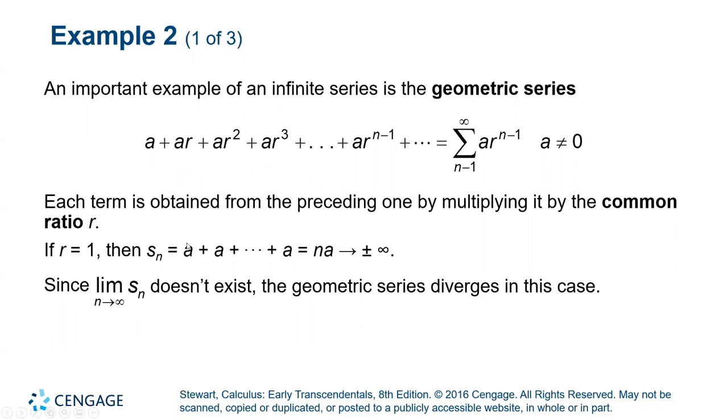If r equals 1, then this is just the addition of a over and over and over again and that would definitely diverge because it would go to infinity. Since the limit of s sub n doesn't exist, the geometric series would diverge in this case because of the fact that this goes towards infinity.